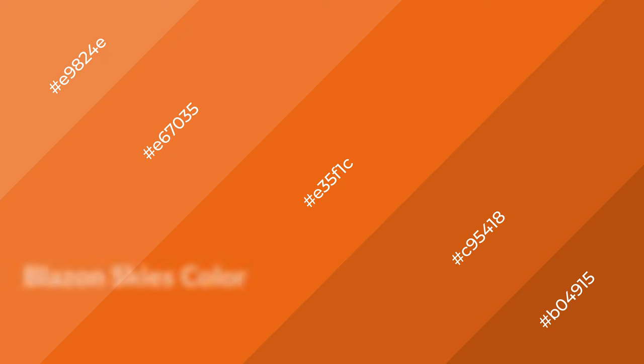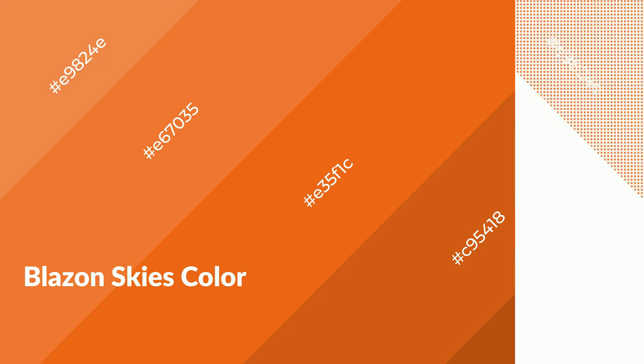To generate shades of a color, we add black to the color, and it is used in patterns, 3D effects, and layers. Shades create depth and drama. Blazing skies is a warm color and it emits cozier and active emotions.